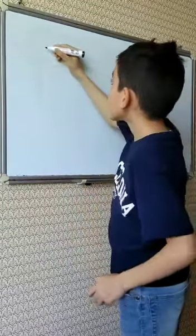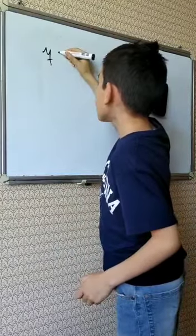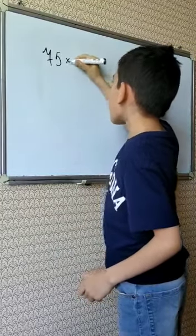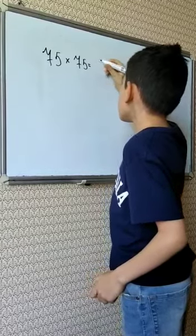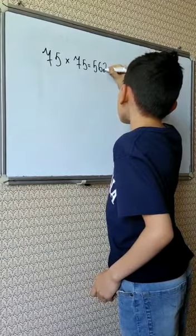For example, 75 multiplied by 75 is 5625.